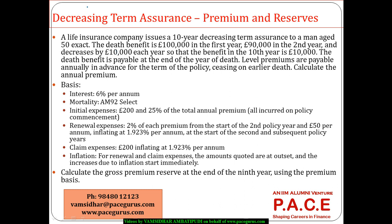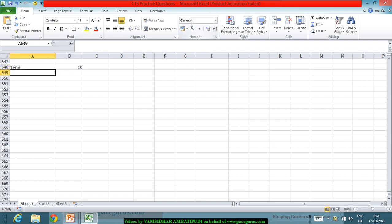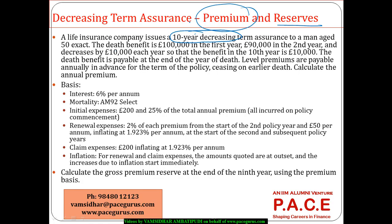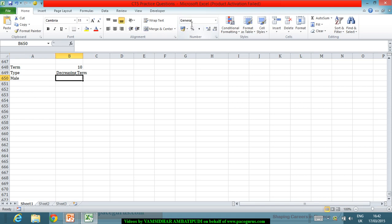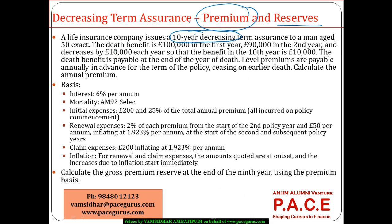Let us look at this numerical associated with a decreasing term life assurance policy, wherein I am interested in computing the premium as well as the reserves. A life insurance company issues a 10-year decreasing term policy for a male aged 50. The death benefit is 100,000 in the first year, 90,000 in the second, and decreases by 10,000 each year so that the benefit in the 10th year is 10,000. The death benefit is payable at the end of the year of death.